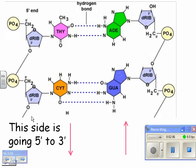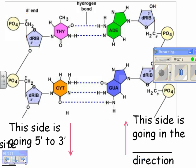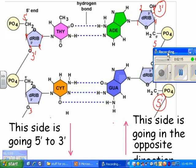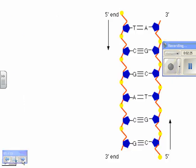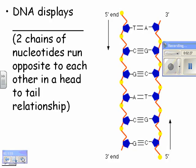So this side is going 5-prime to 3-prime. And this side is going in the opposite direction. And without even counting up the carbons, you can kind of see that the pointy part here, the oxygen part is pointing up, and the oxygen here is pointing down. So they're opposites. So DNA displays what we call anti-parallelism.